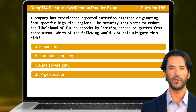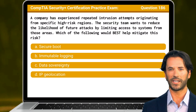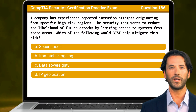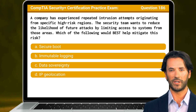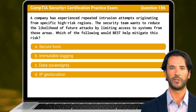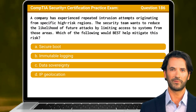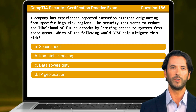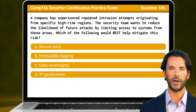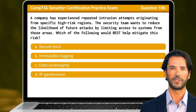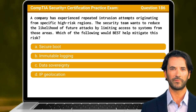Question 186. A company has experienced repeated intrusion attempts originating from specific high-risk regions. The security team wants to reduce the likelihood of future attacks by limiting access to systems from those areas. Which of the following would best help mitigate this risk?